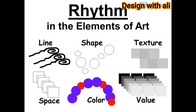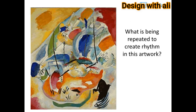Rhythm applies to the elements of art: line, shape, texture, space, color, and value. What is being repeated to create rhythm in this artwork?